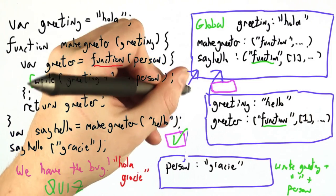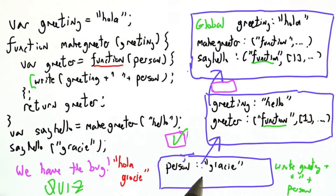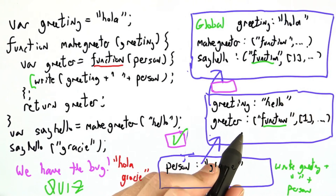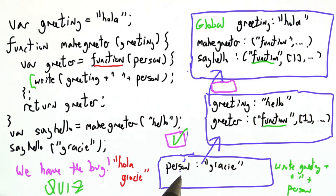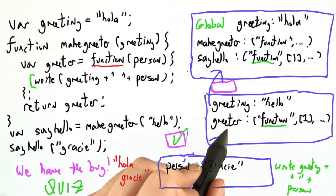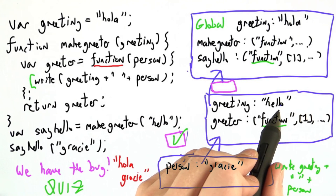If instead I erase this edge and draw it correctly, having this function point back to the environment in which it was defined, now when we try to write greeting plus person, do I have greeting? No. How about my parent? Oh, my parent does and it's hello.